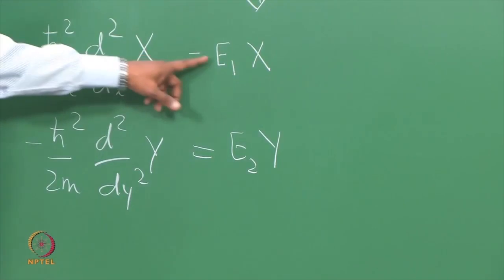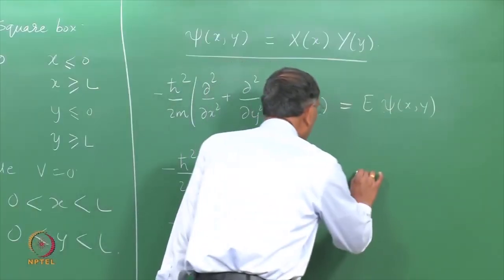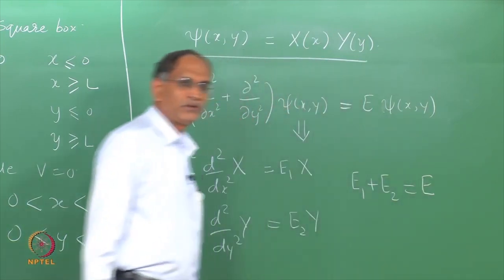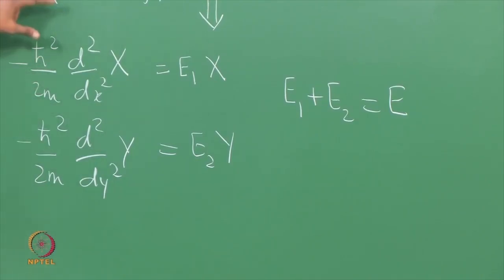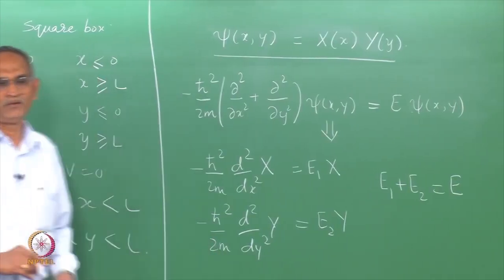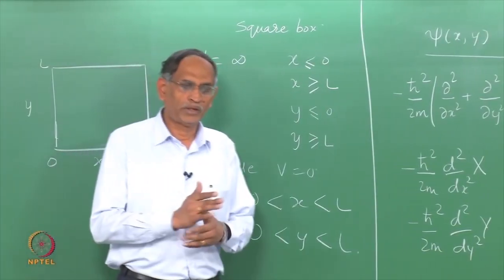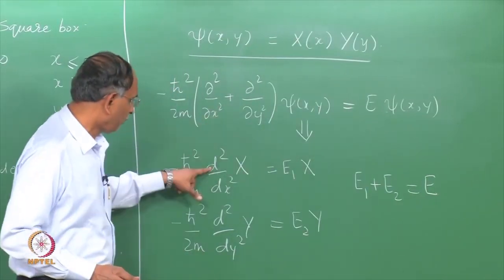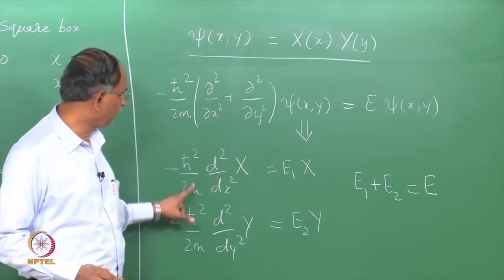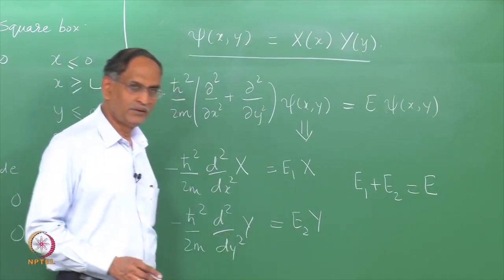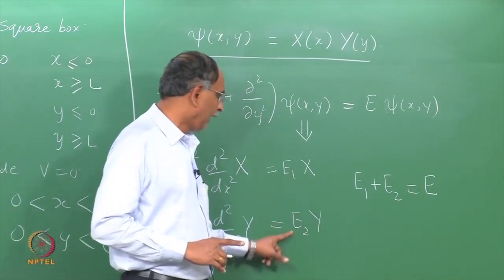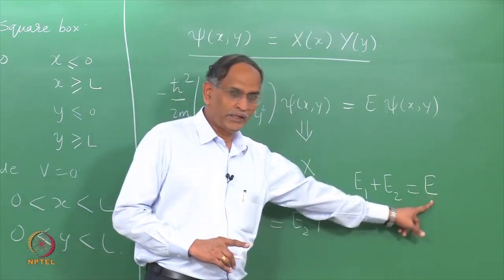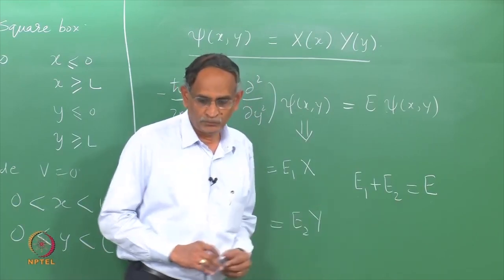These two constants E₁ and E₂ are constrained by E₁ plus E₂ equals E. The actual separation is given in the notes that accompany this video lecture. I would request you to look into that to see how this equation is separated into two one dimensional equations, one for x and one for y, with the constraint that the energies for the two one dimensional problems sum to the total energy.